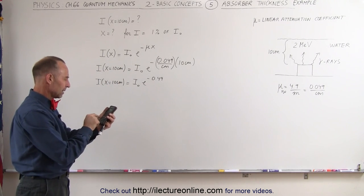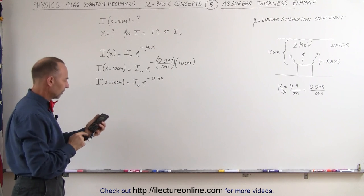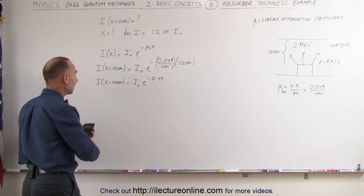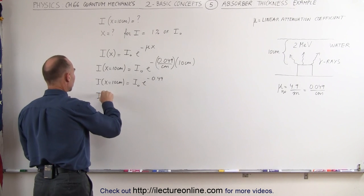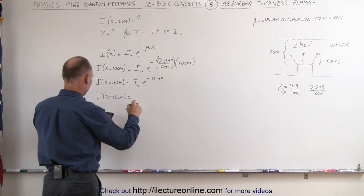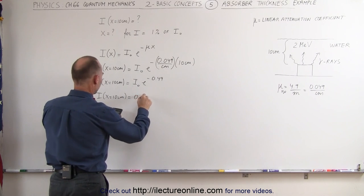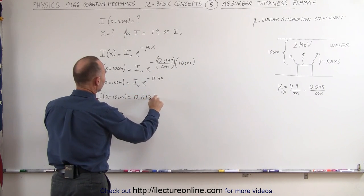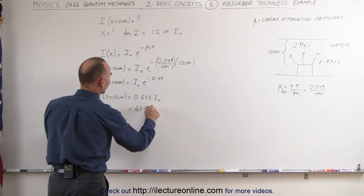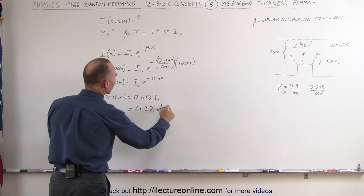0.49 put a negative in front, take the e to the x and notice that the intensity with a layer of water that is 10 centimeters thick is equal to 0.613 I sub not which means it is 61.3 percent of the original intensity.